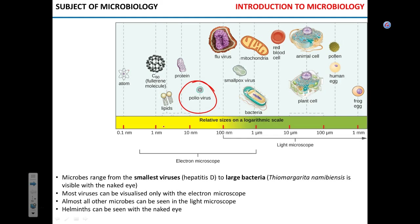Most microbes cannot be seen with the naked eye — you can see them only in the microscope, either an electron microscope like viruses or a light microscope like bacteria, protozoa, and fungi. However, there is a gigantic bacterium called Thiomargarita namibiensis which lives in water on shores, and its diameter is comparable to the thickness of a paperclip wire. That's how big one cell is — it's huge — but we're not going to look at Thiomargarita namibiensis.